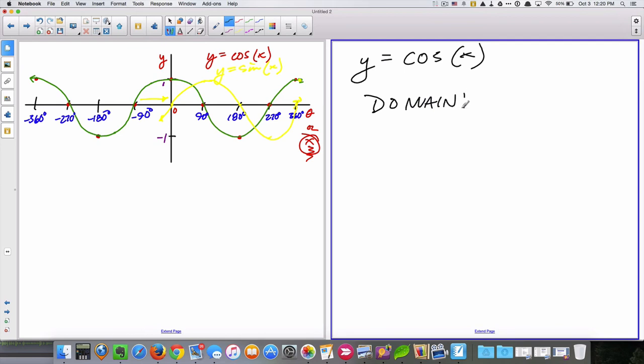Now, remember, the domain are the values for x for which the graph exists. So if this goes forever in that direction and this goes forever in that direction, what do you believe the domain to be? You should be thinking that it's all real numbers or that weird R thing that I don't know how to write, but something like that.